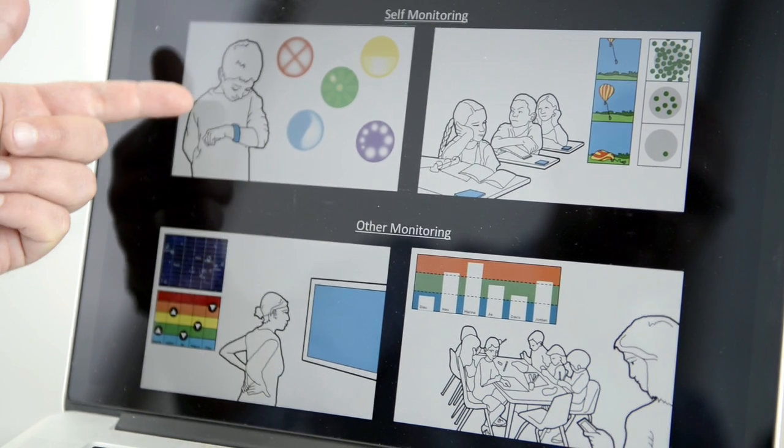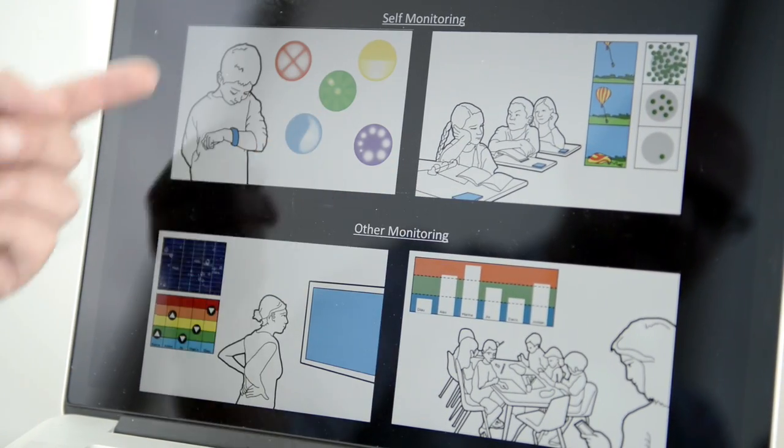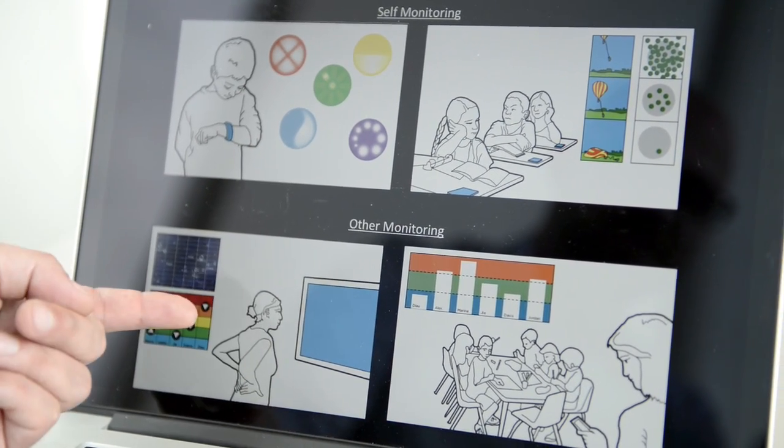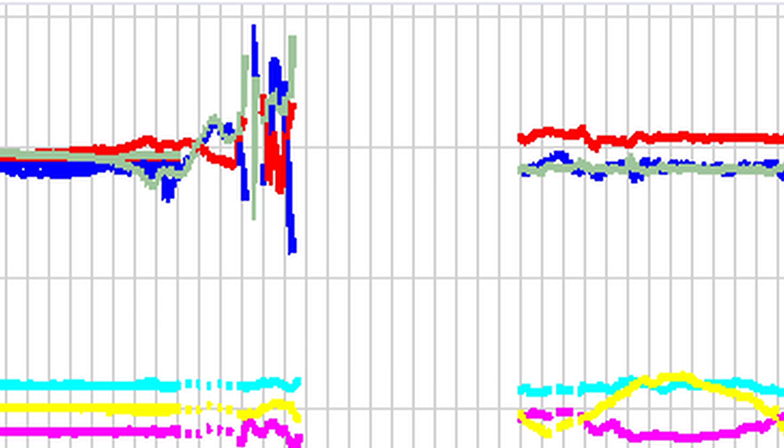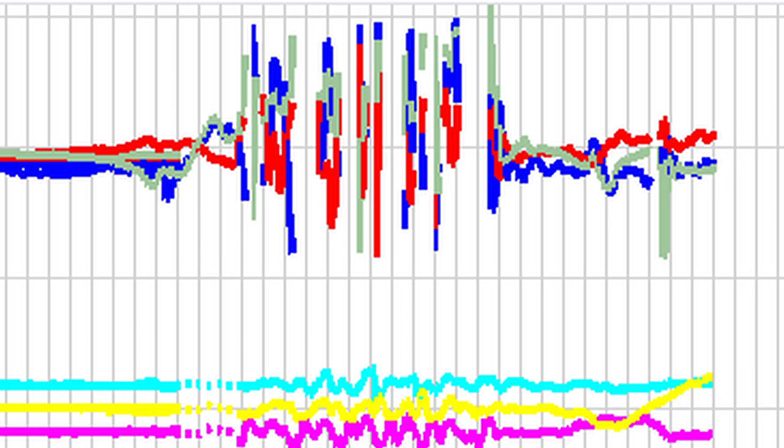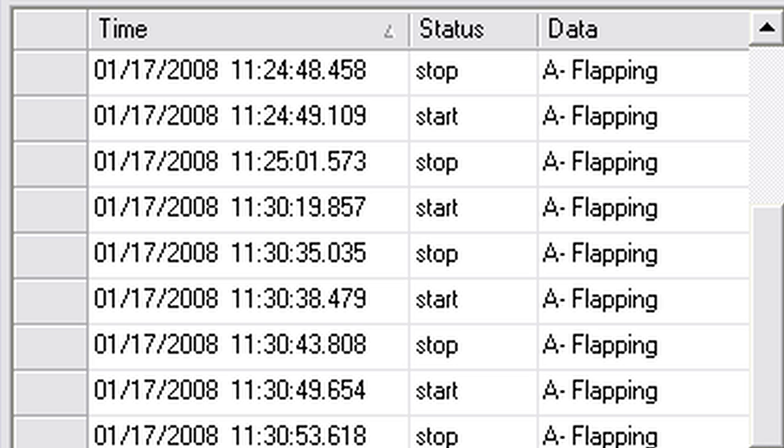These different sensing modalities enable us to better understand when an individual with autism is stressed. The extent to which we can sense that internal state in real time enables caregivers to support an individual prior to them engaging in those challenging behaviors.